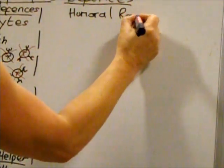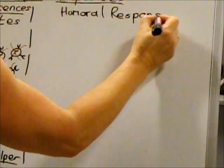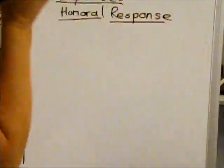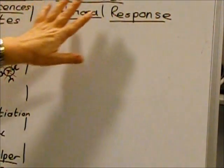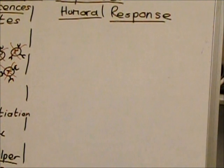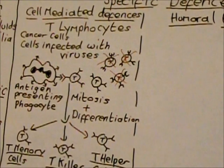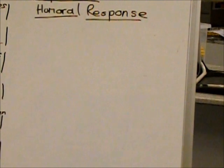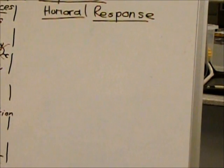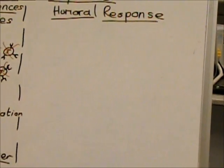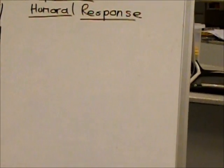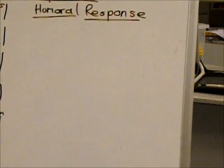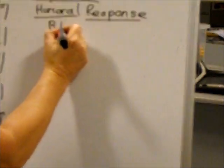The humoral response — 'humour' being an old biology word meaning a body fluid — does not need to be set off by antigens on cell surfaces; it can be any antigen in the body fluids. It's also called the humoral response because it results in antibody production, and antibodies are small proteins soluble in blood plasma. The humoral response involves B lymphocytes.